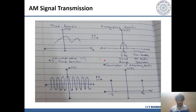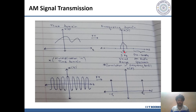Consider the following example to understand modulation and demodulation in communication systems. The challenge with audio signals is the large shift between the frequencies to be transmitted and those of the transmission medium. Human vocal signals have frequencies around 5 kHz, while AM radio band channels operate in the frequency range of 540 to 1600 kHz. We will consider plots in both time and frequency domains for analysis.